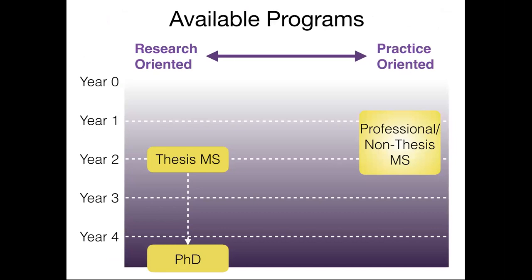There are three possible programs. On the x-axis is the transition from research-oriented to practice-oriented, and on the y-axis is the time required to complete. If you choose the practice-oriented professional master's, you can theoretically complete it in less than a year, or take a little more than two years if you're working simultaneously. We also have a thesis master's program, which is research-oriented, and a PhD which can take four or more years.